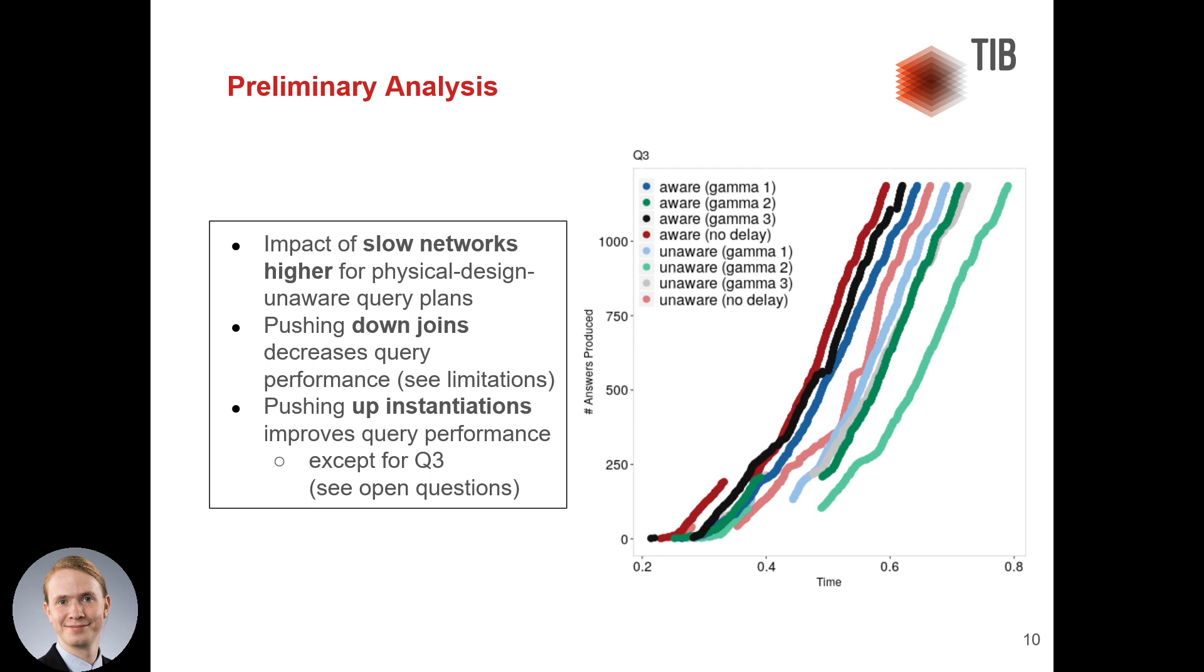For the case of filters, we saw that pushing up the instantiations improved the query performance, except for query 3,